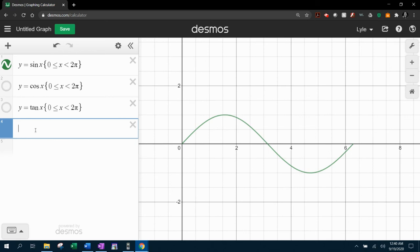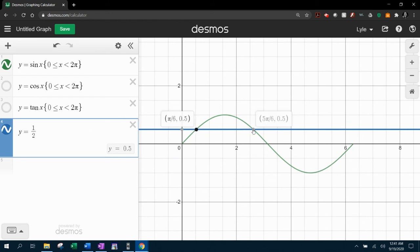And we want to know where is this equal to a half. So we can type in y equals a half. And that's going to show us that there are two points where the sine wave is at a height of a half.